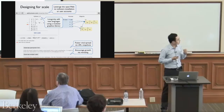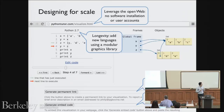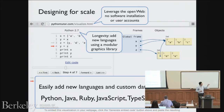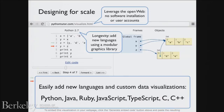Another thing I did was ensure longevity by building a modular graphics library similar to D3 but tuned for data structure visualizations, allowing you to add new languages really easily. I didn't want this to be just a Python tool — people have made one-off things for one language before. Python is really popular for teaching now, but in 5, 10, 15 years it may be something else. I wanted a generic framework that supports a lot of languages, and as an existence proof I've extended it to many languages.